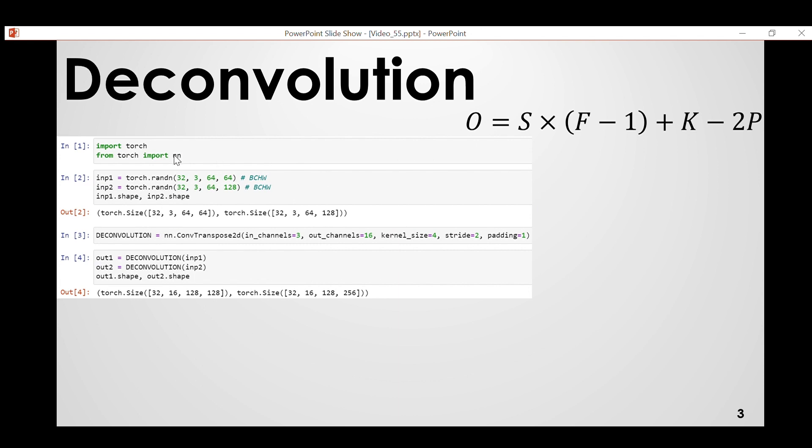So the input shapes are same for both inputs and I have also gave these parameters same, just replaced convolution with deconvolution or transposed convolution in PyTorch. Then we provide these inputs to the deconvolution layer and we get output and the shape looks like this. Now let's use the formula to understand.